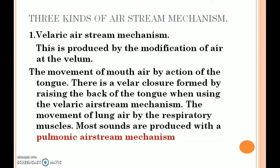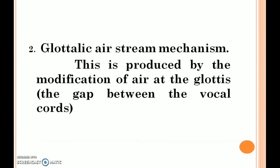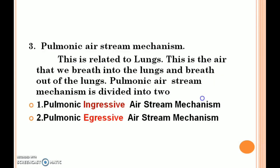The glottalic airstream mechanism is produced by the modification of air at the glottis — the gap between the vocal cords. The pulmonic airstream mechanism is most importantly connected with the production of speech sounds. It is related to the lungs — it is the air that we breathe into and breathe out of the lungs. The pulmonic airstream mechanism is divided into two: the pulmonic ingressive airstream mechanism and the pulmonic egressive airstream mechanism. The pulmonic egressive airstream mechanism is most importantly connected with the production of speech sounds.